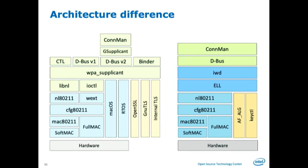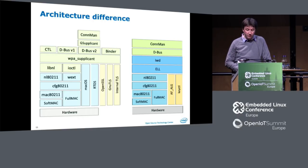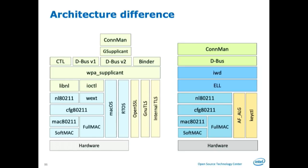With IWD we only focus on netlink 802.11, fullmac or softmac cards. We use the AF_ALG interface for ciphers and key control for asymmetric cryptography in the kernel. The only thing we really need on the userspace side is TLS records — TLS framing and PEM format to unpack certificates. Everything else is handled by the kernel. Then ELL handles things like mainloop, D-Bus, netlink — all baked natively into ELL, nicely asynchronously in a single process. Then you have IWD and just your D-Bus interface, and you can put Conman, Network Manager, whatever you want on top.